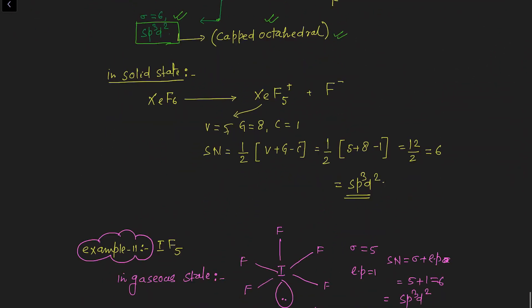In solid state, XeF6 consists of XeF5+ and F−. Xenon is surrounded by five fluorine atoms (monovalent), valence electrons of xenon = 8, cation charge = 1. Putting all values into the formula gives steric number 6, meaning hybridization of xenon in XeF5+ is sp3d2.